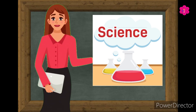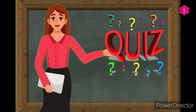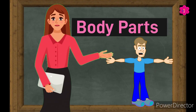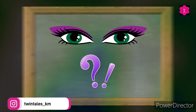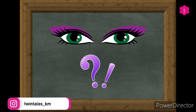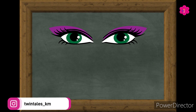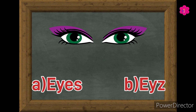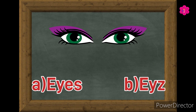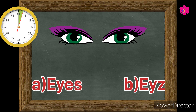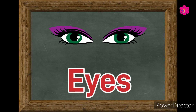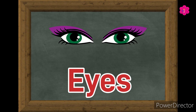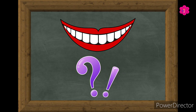Hello kids, welcome back to science class. This is a quiz video and today's quiz is based on body parts. So let's begin the quiz. Can you tell me what it is? Yes, this is eyes. Now you have to choose the correct spelling of eyes. The correct spelling is E-Y-E-S, eyes.